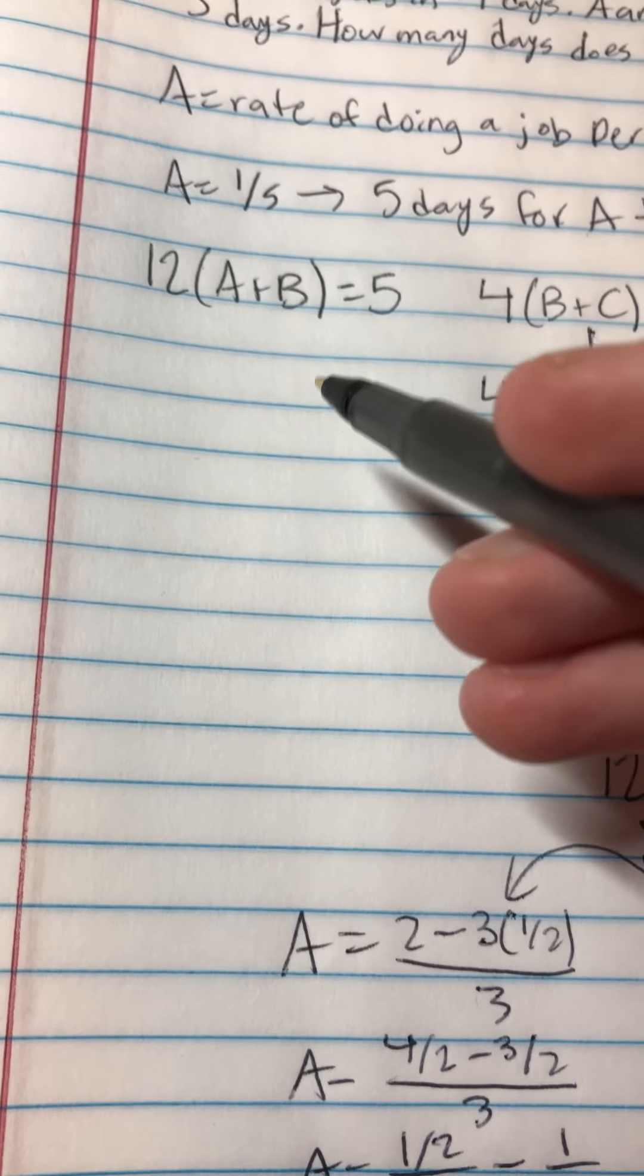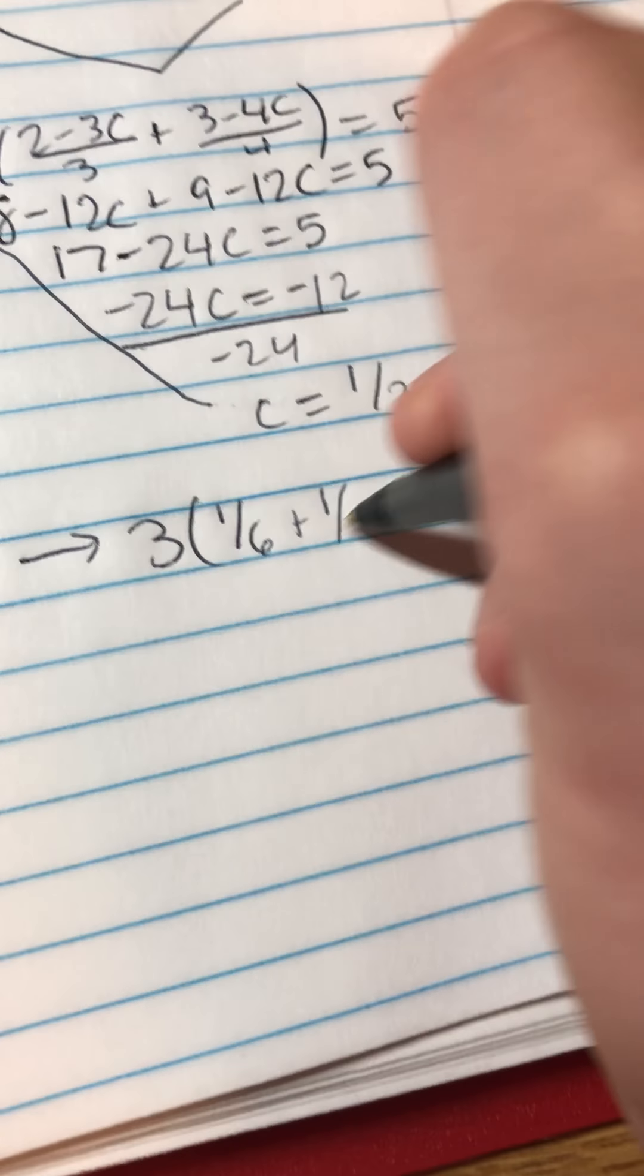Now I'm going to plug just to make sure A is right. I'm going to plug into the 3A plus C because we have C equals 1/2 and A equals 1/6. So we'll check that. We're going to do 3 times 1/6, which is A, plus 1/2, which is C, equals 2.